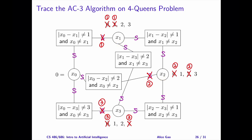Step 4. Let's remove the arc between x1 and x3, where x1 is the primary variable. Is this arc consistent? If x1 is 2, x3 equals 1 satisfies both constraints. If x1 is 3, x3 equals 2 satisfies both constraints. Therefore, this arc is consistent. Let's continue.